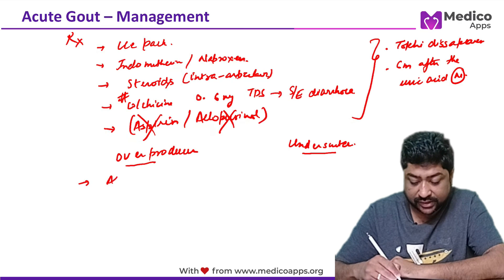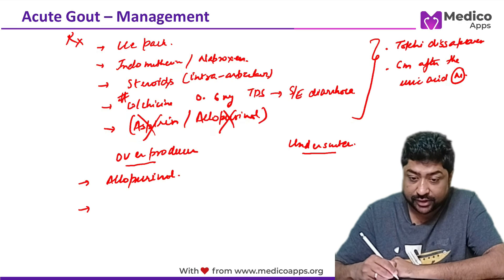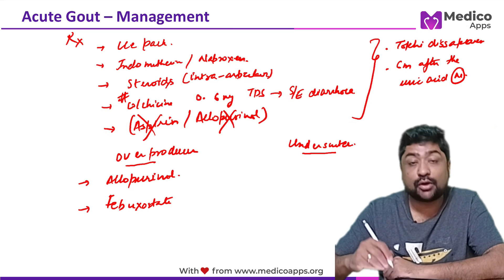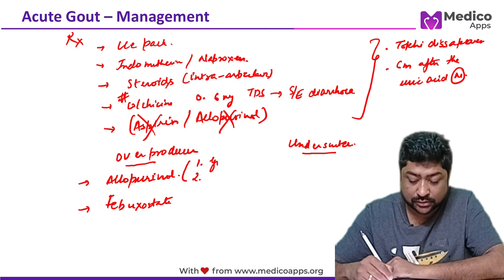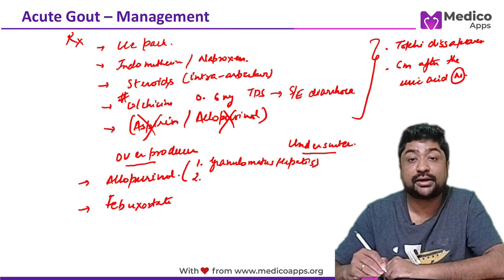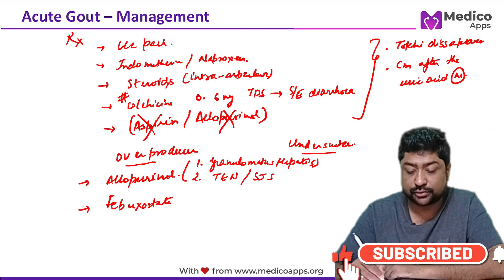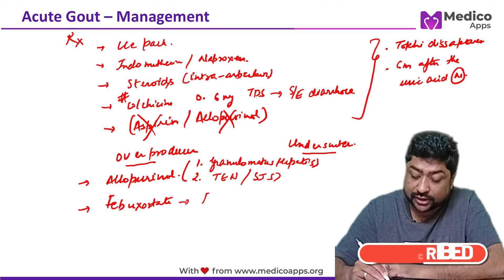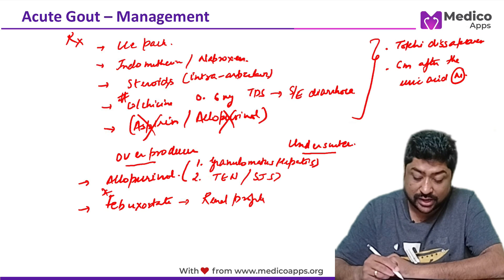For over-producers, we give allopurinol. Another very important drug is febuxostat. Side effects of allopurinol — directly asked in examinations multiple times — include granulomatous hepatitis, and toxic epidermal necrolysis or Stevens-Johnson syndrome. Febuxostat has a very good renal profile, so for renal patients you will prescribe febuxostat, not allopurinol.